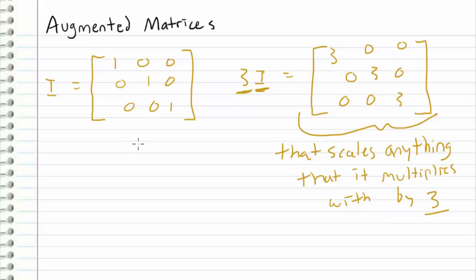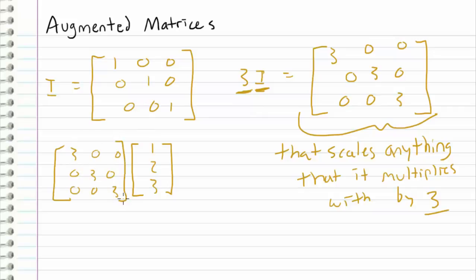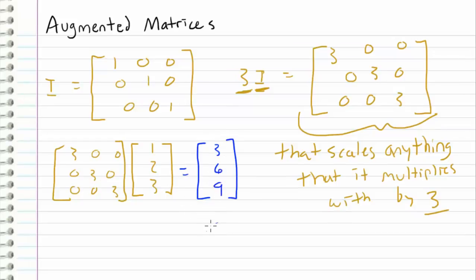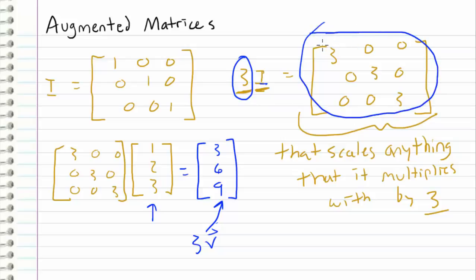We can illustrate that idea. Let's say we have the vector [1, 2, 3]. If we were to multiply this vector by 3I — that is [3, 0, 0 / 0, 3, 0 / 0, 0, 3] — then what we should get is three times this vector. Carrying out the multiplication: the first row gives three times one, which is three; the second row gives three times two, which is six; and three times three, which is nine. We can see that this result is indeed three times the original vector.